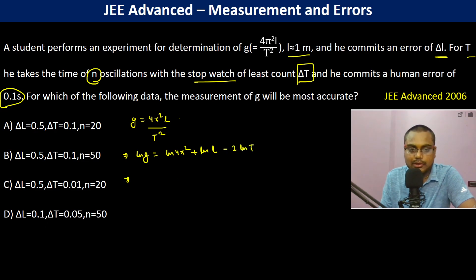If we calculate the error by differentiating, the differentiation of this constant term is going to be 0. So we get dL by L minus, but because errors are additive, therefore I am putting 2 plus dT by T.